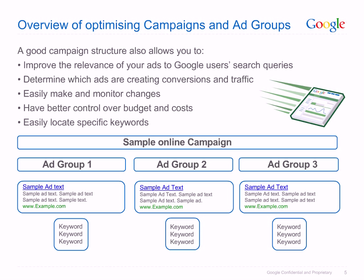We will show how well-structured campaigns by theme or product will mean more than just an account that's easy to manage and keep organized. You'll also have sets of ads and keywords that are directly related to each other. This helps improve your quality score, which in turn keeps your costs low. A good campaign structure also allows you to improve the relevance and thus effectiveness of your ads to Google users' search queries, determine which ads are creating conversions and traffic, easily make and monitor changes, have better control over budget and costs, and easily locate specific keywords.